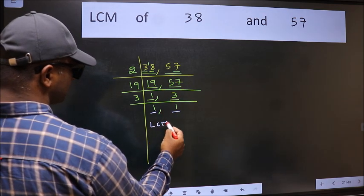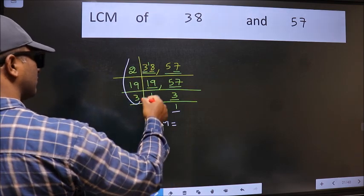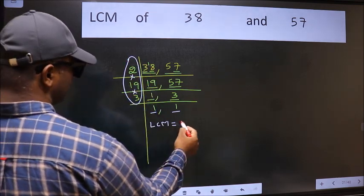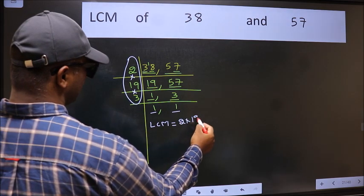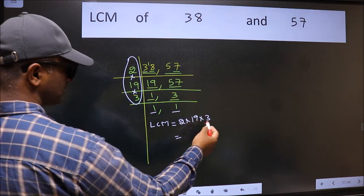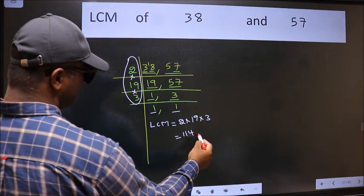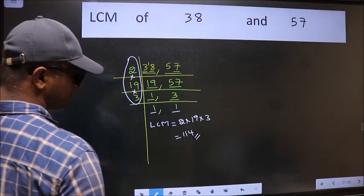So our LCM is the product of these numbers. That is 2 into 19 into 3. When we multiply these numbers, we get 114 as our LCM. Thank you.